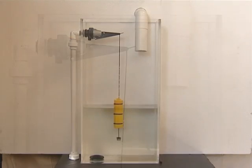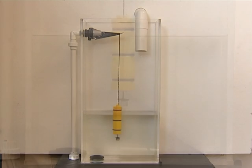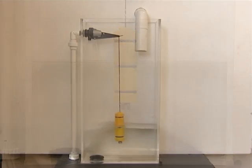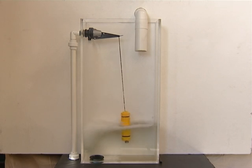As the tank empties, the weighted float travels down the cord and sits on the bottom stop to activate the valve. The valve will run until the weighted float lifts clear of the bottom stop.